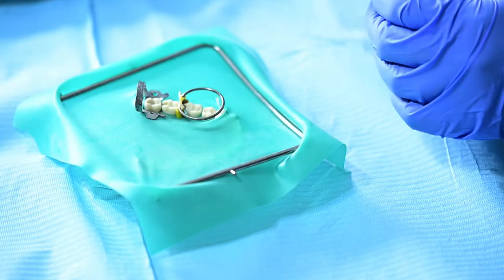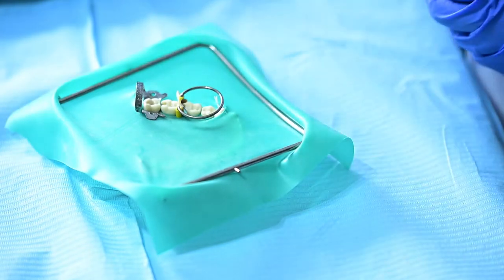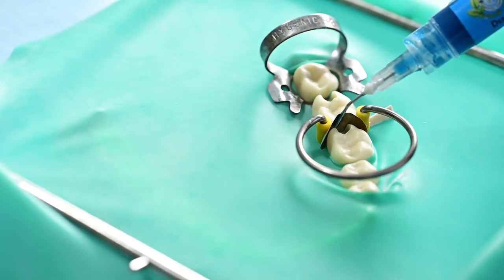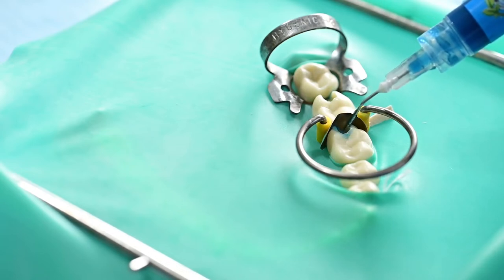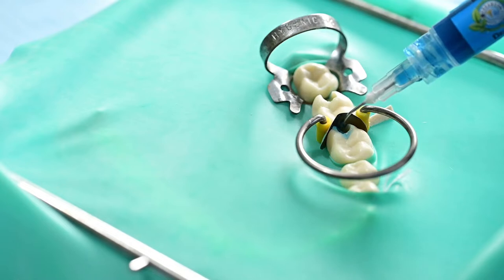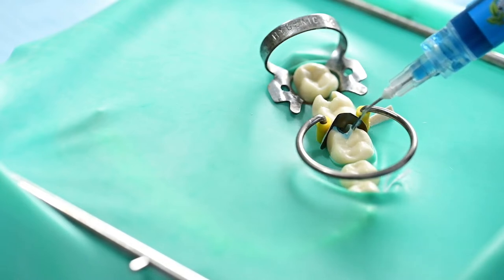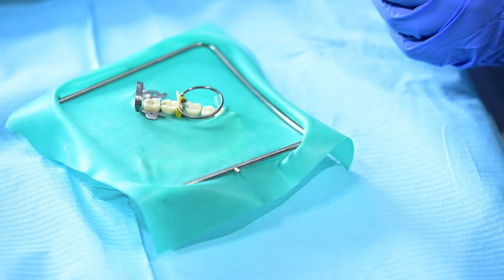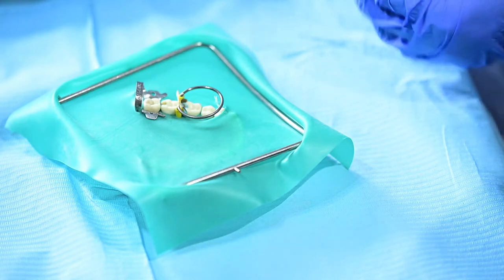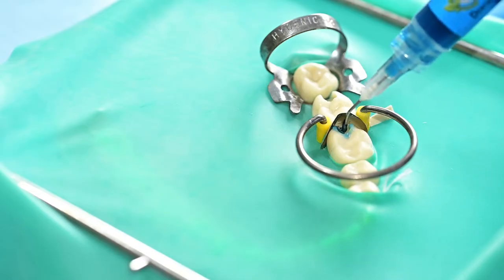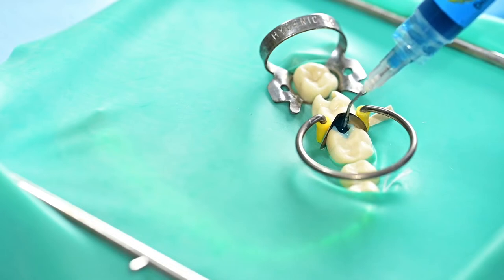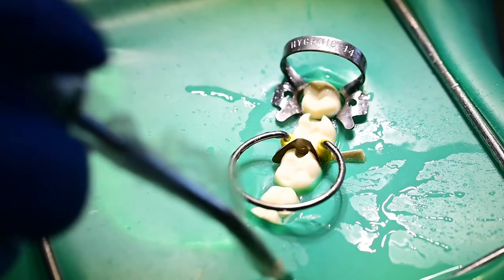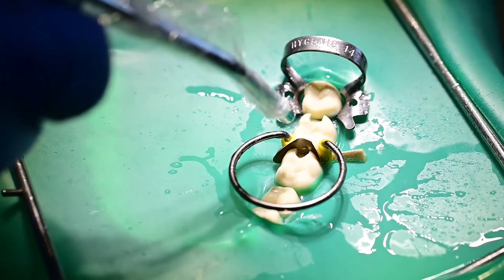After you have secured the sectional matrix I shall do total etching on this particular tooth where I first selectively etch the enamel. And then at the end of the 15 seconds I want to flood the cavity with the etchant. Because the bonding agent I have selected today is an etch and rinse or the fifth generation bonding agent. Because of the wet bonding that we want to assure has happened.